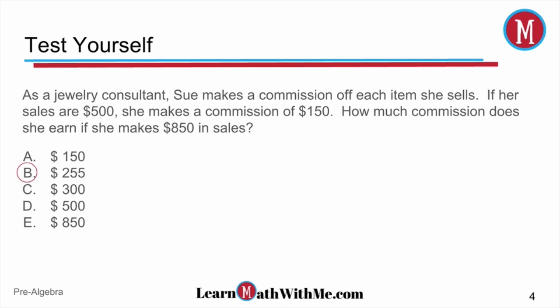When taking the ACT, we want to think about the fastest way to work the problem. So we can set up a ratio. We know she makes $150 off of $500 in sales, and we set that equal to our unknown X — how much she makes when she has $850 in sales. Those two ratios are equivalent, so we cross multiply: $150 times $850 equals $500 times X. Solving for X gives us $255.